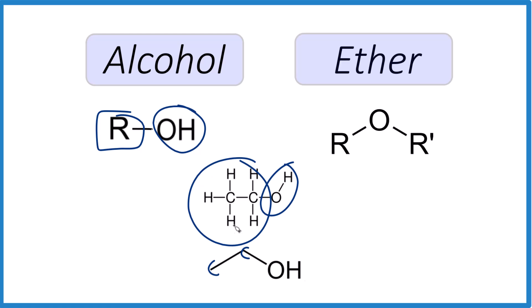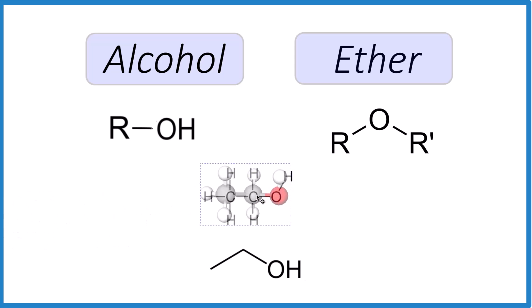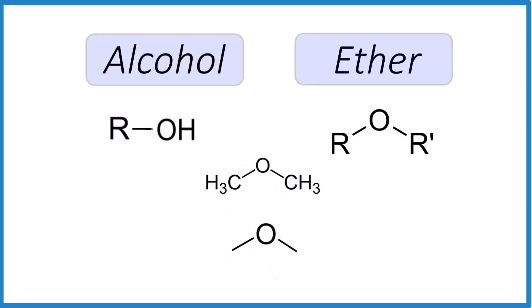Down here you see the carbons — we don't write the hydrogens in because we know carbon bonds to four things. You could visualize this like this, where we have our carbon with the hydrogens around it and then that oxygen on the end.